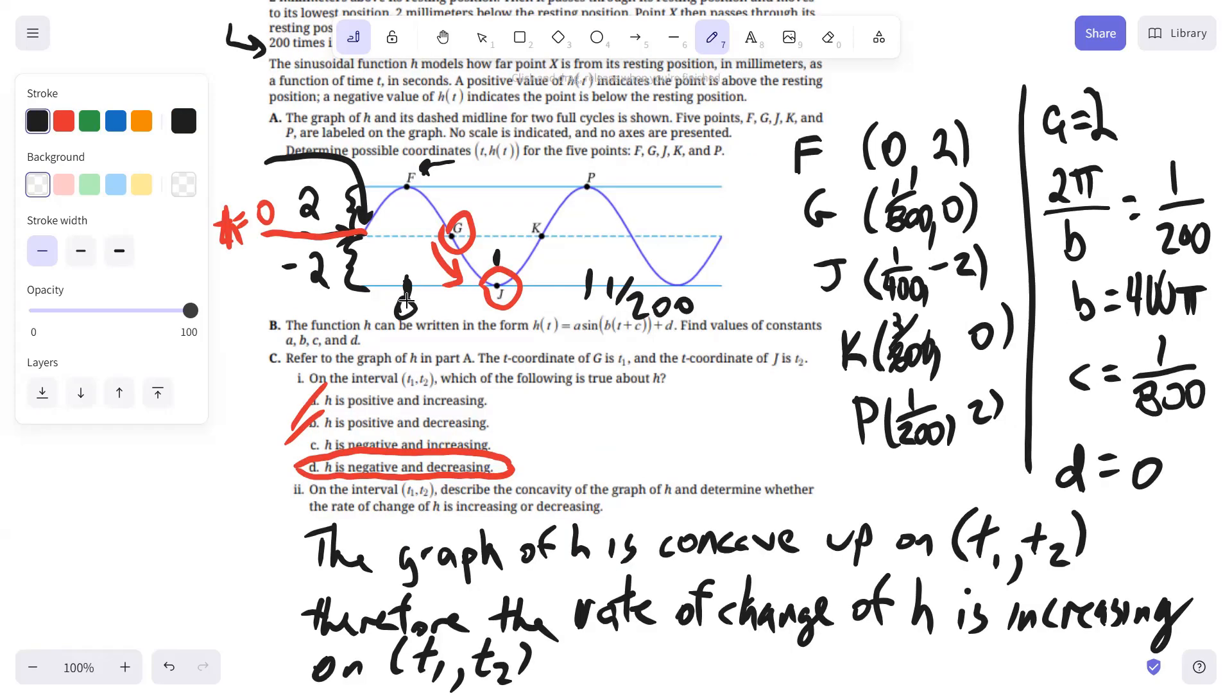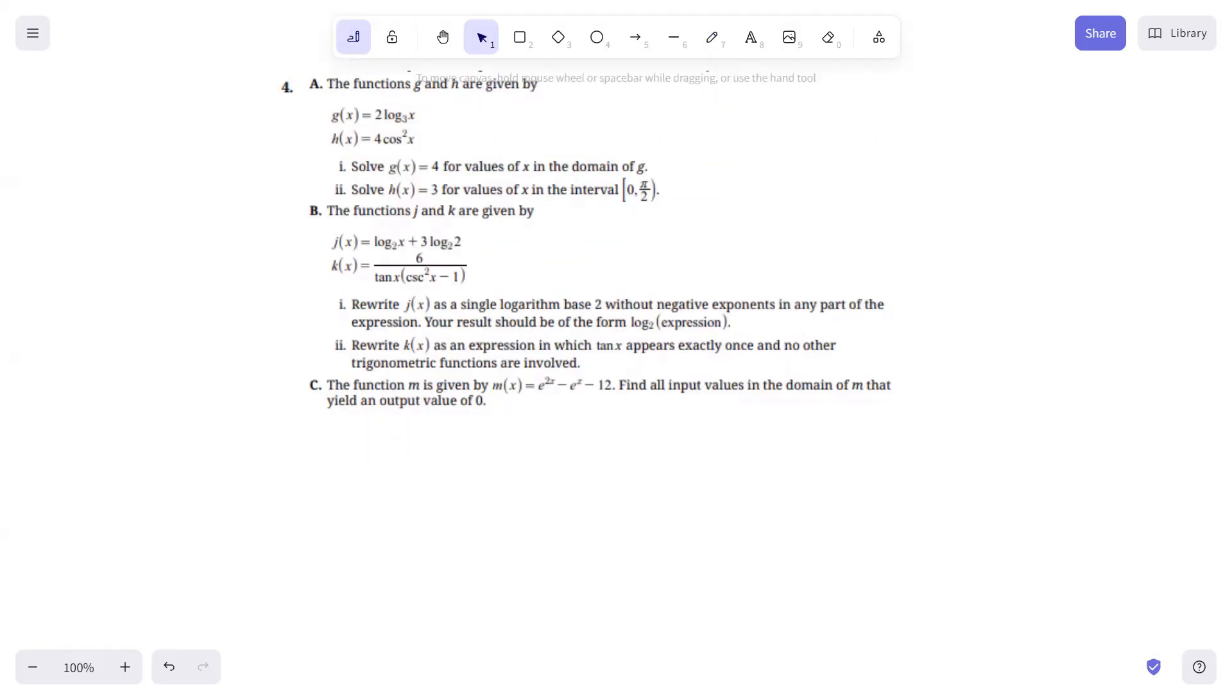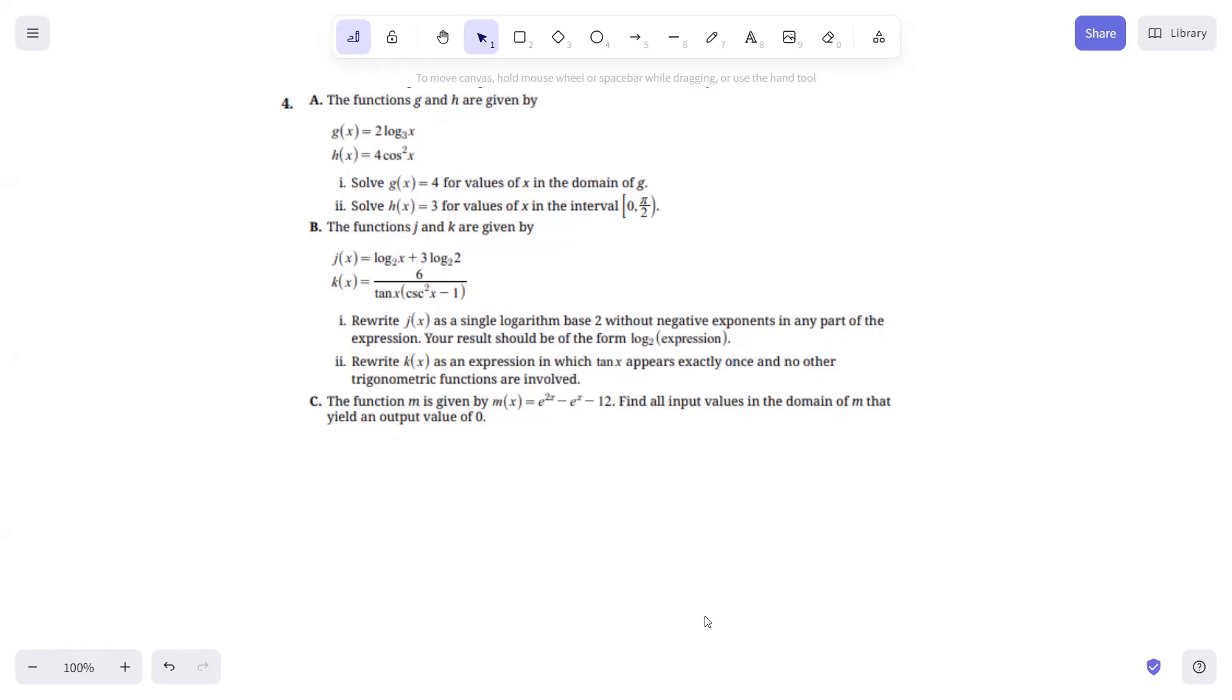And there you have it. And that finishes problem number three. Number four, the last question here. The functions G and H are given by part 1 solve G of X equals four for the values of X in the domain of G.